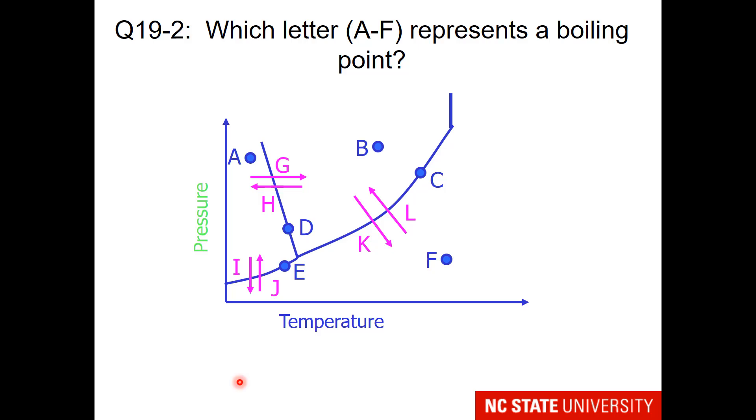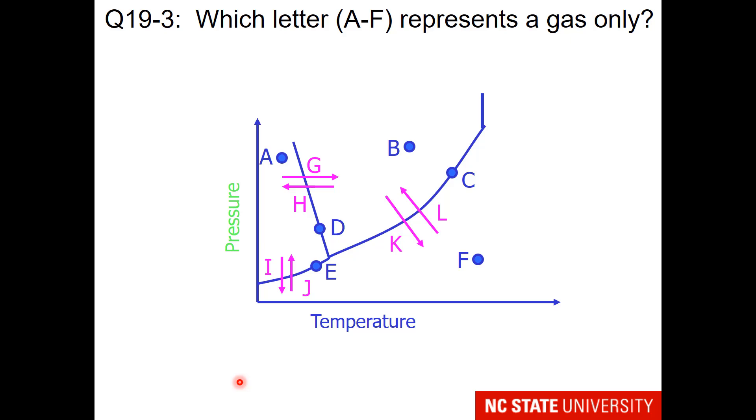So here are some hopefully very simple memorization questions for students. I'd like to know which letter A through F represents a boiling point. Which letter A through F represents a gas only? And which arrow G through L represents sublimation?